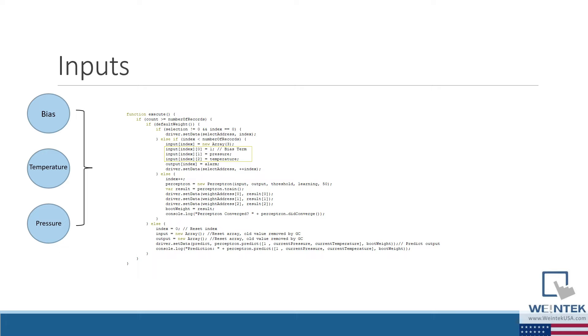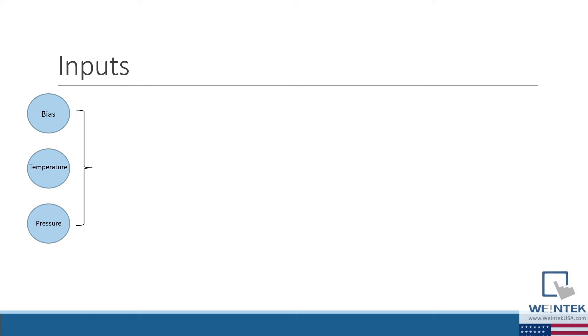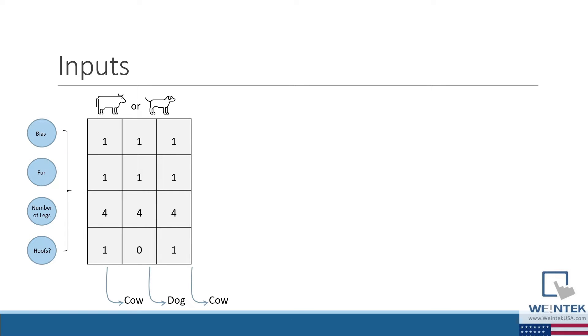Each input is a measurable quality that will help the algorithm determine the output. Now the algorithm may process n number of inputs, but not all inputs are equal.